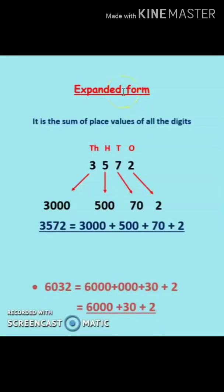Today we are going to cover expanded form and short form of four-digit numbers, that is numbers up to nine thousand nine hundred ninety-nine. Expanded form means it is the sum of place values of all the digits. So whenever you have to find the expanded form of any number, whether it is a three-digit or four-digit number, you just have to write down the place value of all the digits.